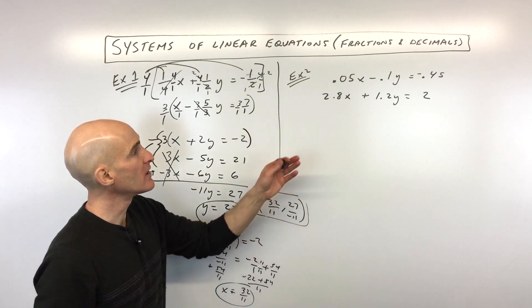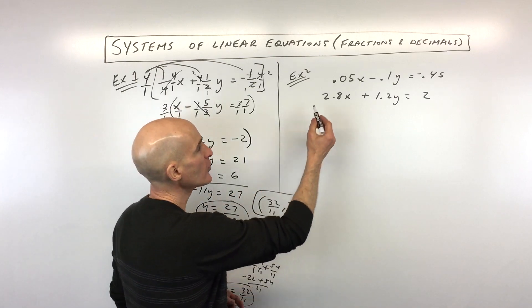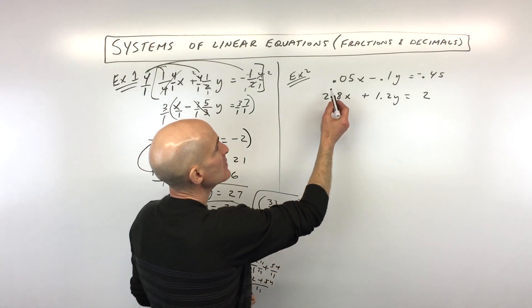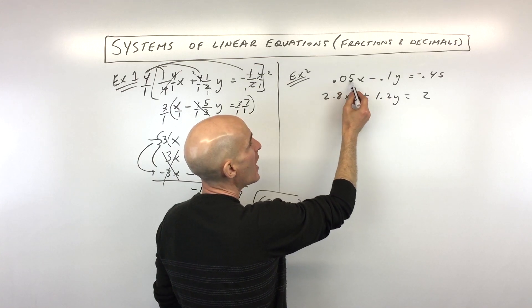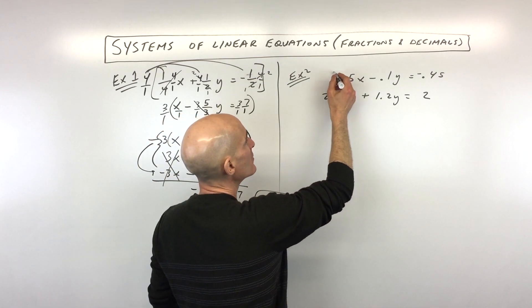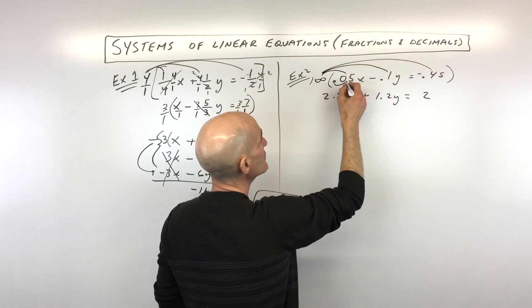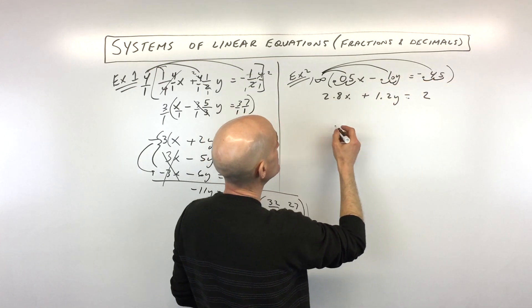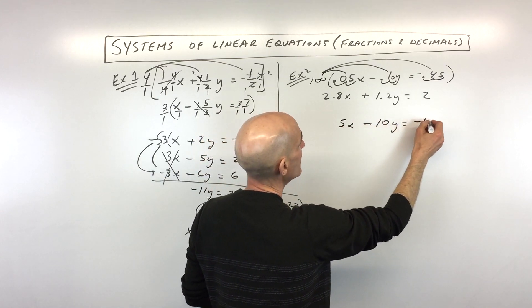How about example number two, where you're working with some decimals? In this case, what we want to do is clear the decimals — so what can we multiply by to get rid of those decimals? In the first equation, we'd want to move the decimal point two places to the right, so we multiply by 100. We're distributing it to each term, moving each decimal two places. We need to put a placeholder zero in one case. So what we have is 5x minus 10y equals negative 45.